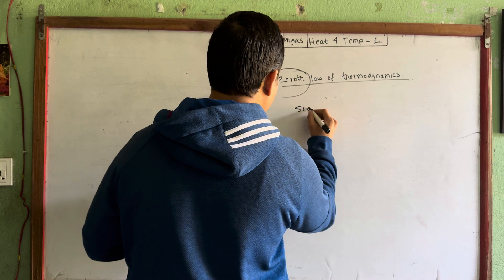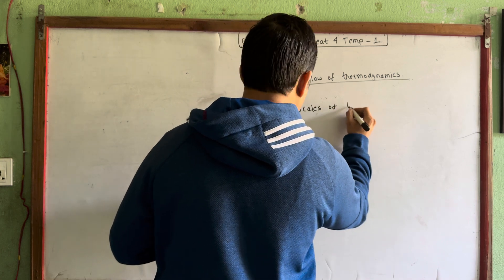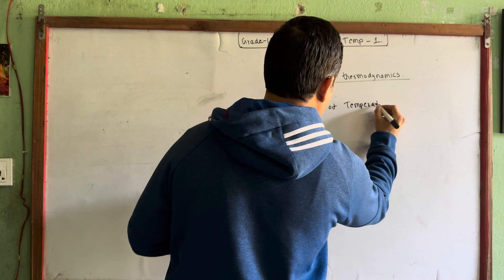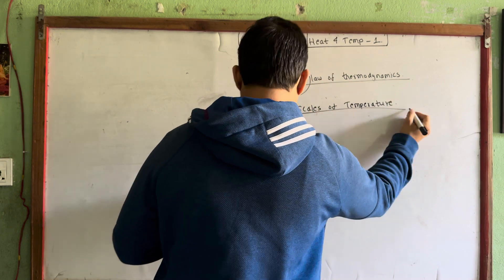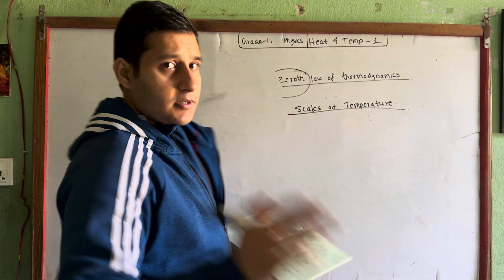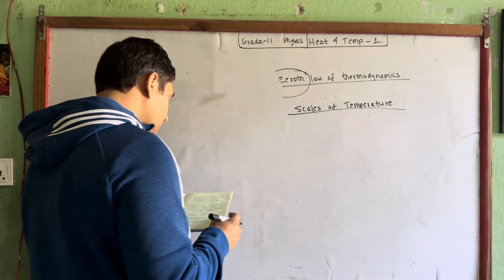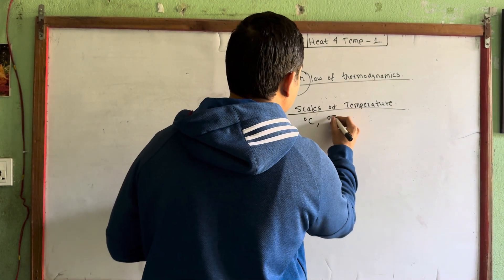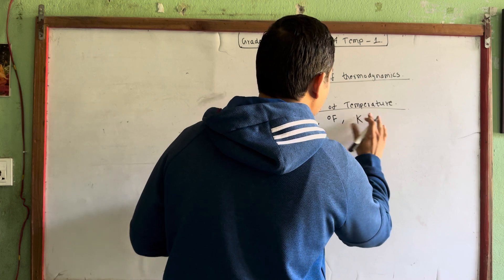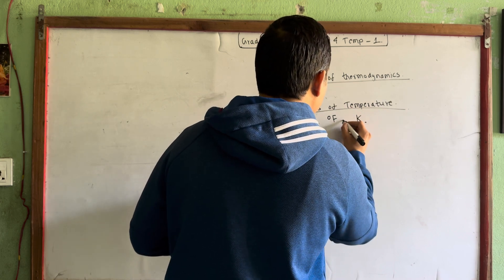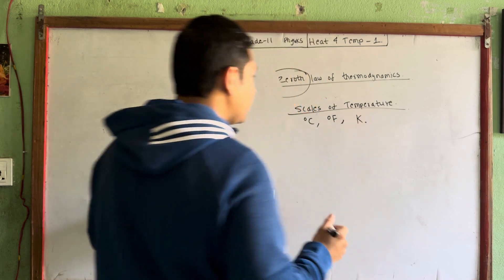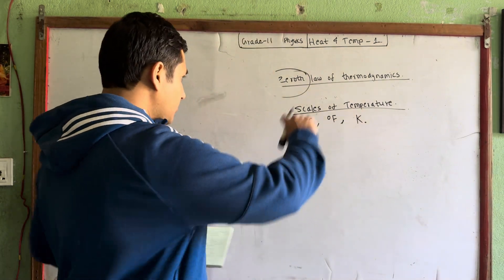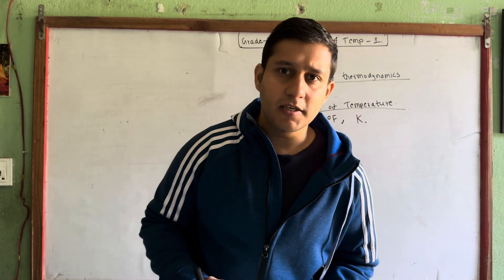The next topic is scales of temperature. The scales of temperature include degree Celsius, degree Fahrenheit, and Kelvin. Kelvin is the SI unit. We will look at the relation formula between these scales.